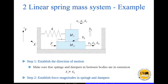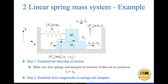The next step is to establish force magnitudes in springs and dampers. Looking at this spring, this end is stationary and this end moves by x1. Therefore, the magnitude of the force in the spring is k times x1. Note that x1 is positive because it is moving in the positive x direction. Similarly, the force in damper B1 is B1 times x1 dot, because this end moves in the positive x direction with velocity x1 dot and the other end is stationary. For the middle damper, this end moves with velocity x1 dot and the other end moves with velocity x2 dot. The relative velocity is x1 dot minus x2 dot, so the force magnitude is B2 times (x1 dot minus x2 dot).